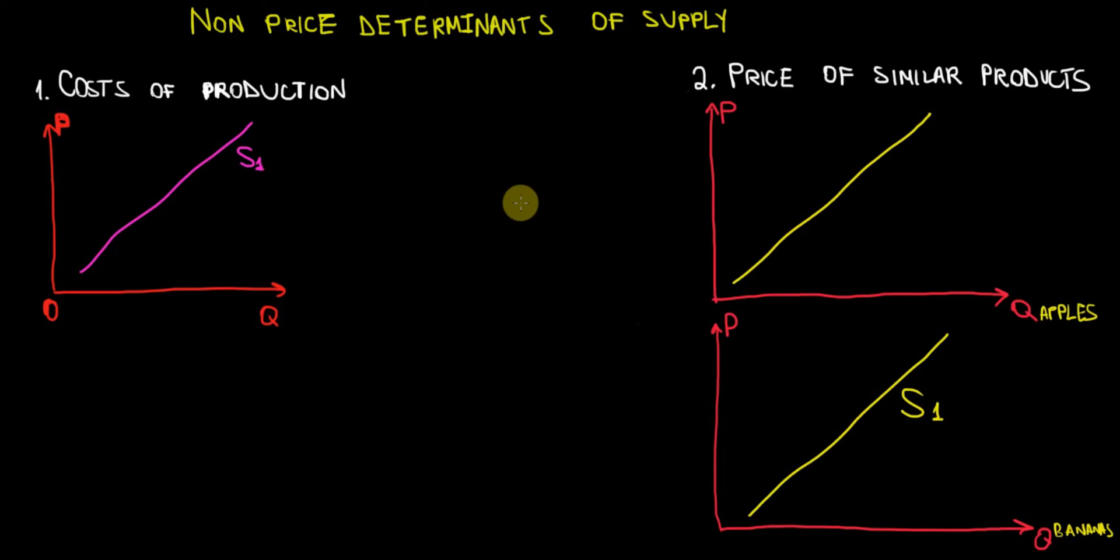In this video I would like to discuss the non-price determinants of supply, meaning the factors that cause shifts in the supply curves. I listed here two of these factors; in the next video I'm going to describe the other three factors left. So with that being said, let's start.